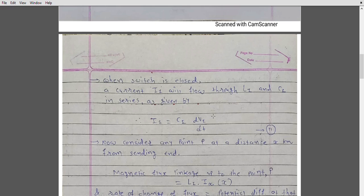V1 is the potential to which capacitor C is raised due to the charging effect of the current. This is followed by subsequent charging of capacitors C2, C3, C4, up to Cn. Thus an electrical field is established, and as a consequence, a traveling wave propagates from the generating end toward the remote end of the transmission line.